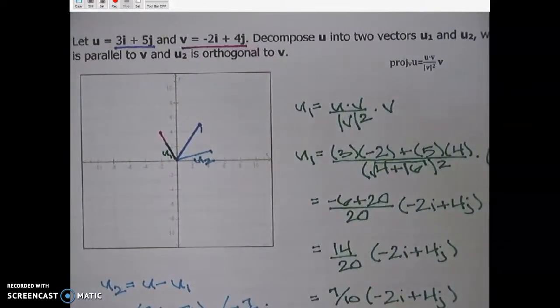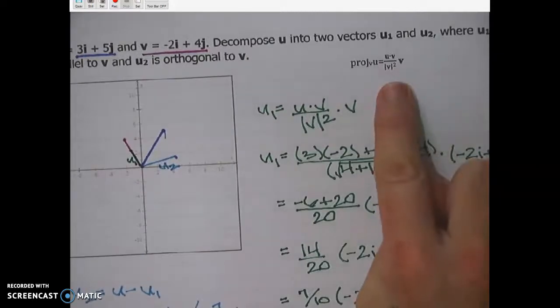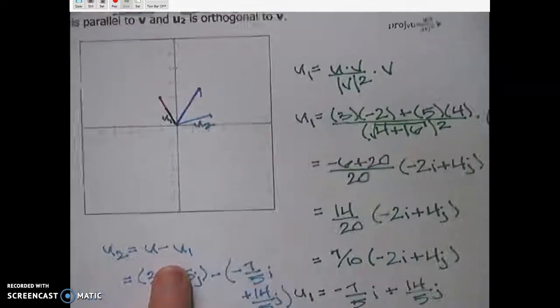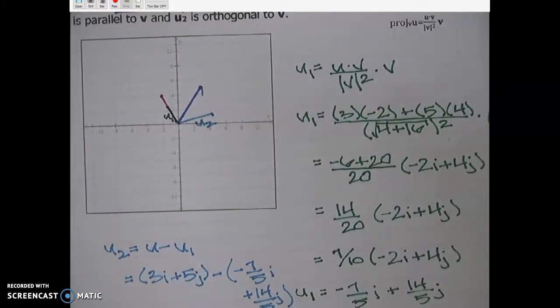So again, don't let these freak you out because the wording sounds so crazy. All you have to do is use this formula to find u1 and then subtract u1 from u to find u2. You got it. Hope you found this helpful.